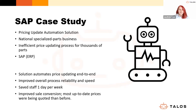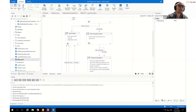The second case study is for a specialist parts manufacturer — a pricing update automation solution. Like many manufacturers, this client had an inefficient price updating process for thousands of parts. The in-house technology is SAP for ERP. Our solution automated the price updating process end-to-end, improving the overall process reliability and speed. It's saving staff one day per week, sales conversion has improved, and they're now using the most up-to-date prices for quoting at all times — which was not always previously the case.